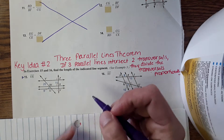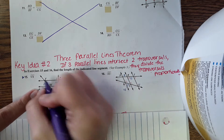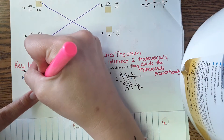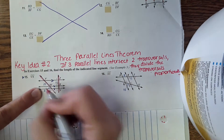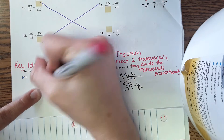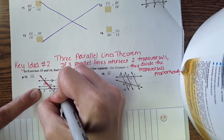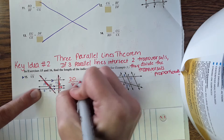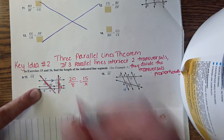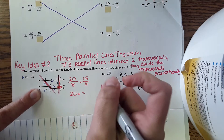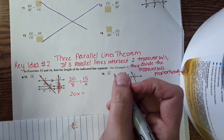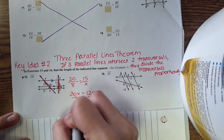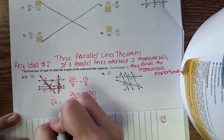Number 15: we have three parallel lines and two transversals. The segments are proportional — this part is proportional to this in the same ratio. It's asking for VX, so that's our x. Set up the proportion: 20 over 8 equals 15 over x. Cross multiply: 20x equals 120, divide both sides by 20, and x equals 6. The length of VX is 6 units.